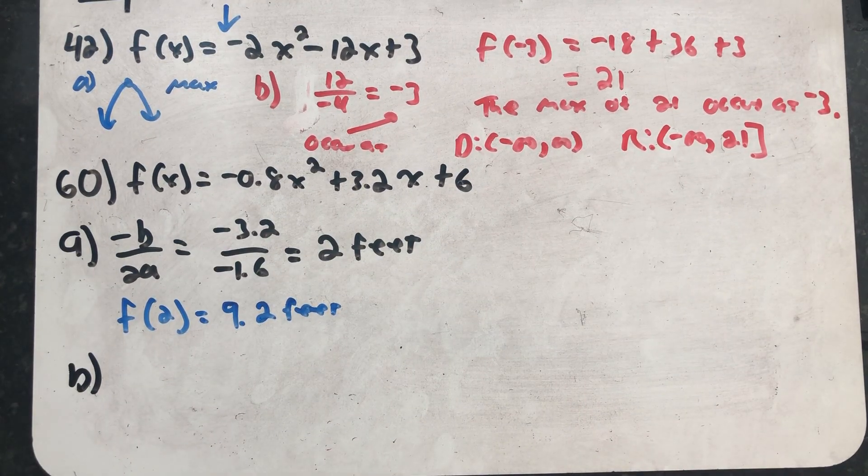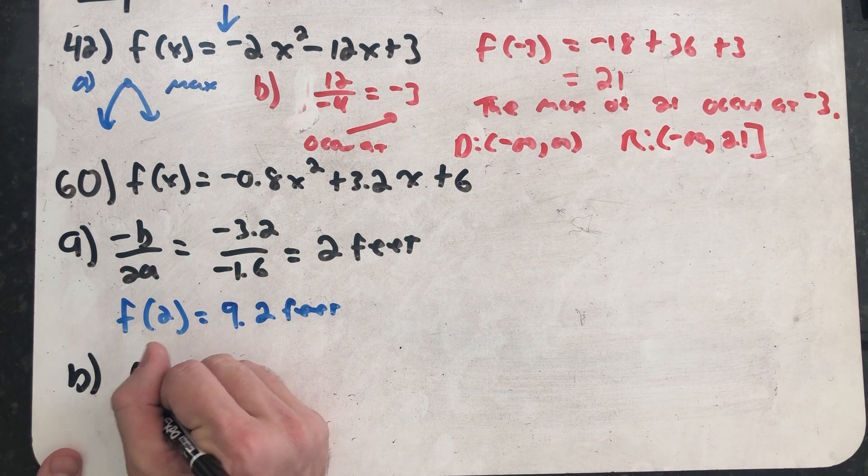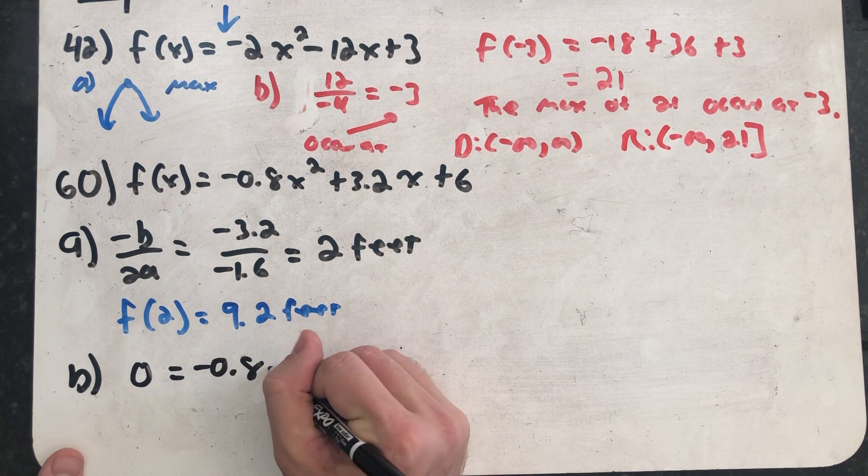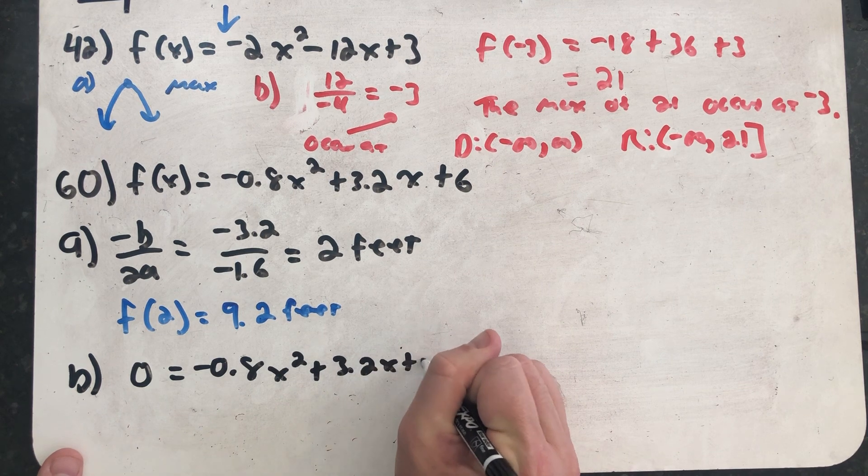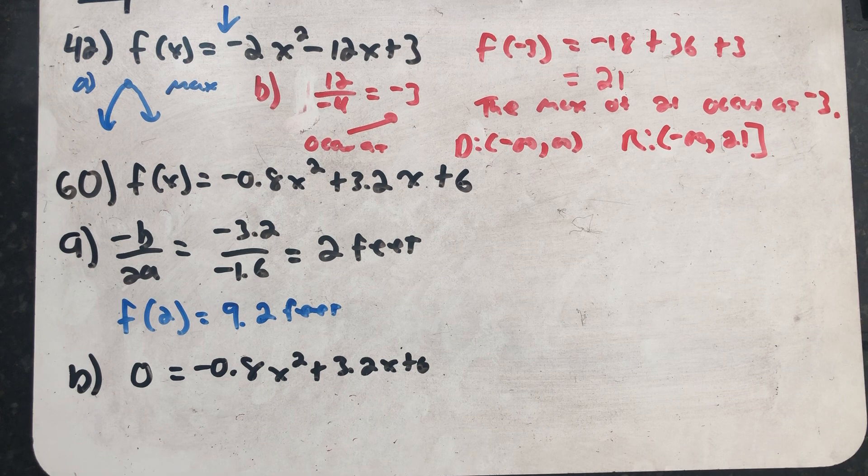Part B asks us, how far does the ball travel horizontally before hitting the ground? Well, what I know is that the ball hits the ground when the height is 0. So I'm really asked to solve this quadratic equation. This question is really about the x-intercepts.